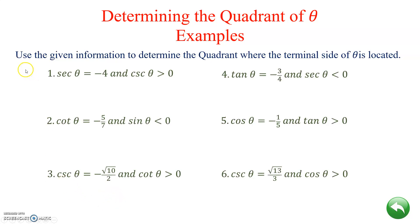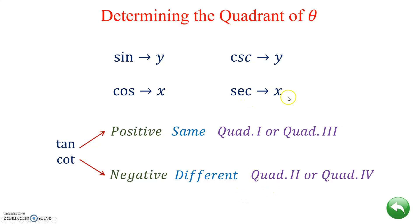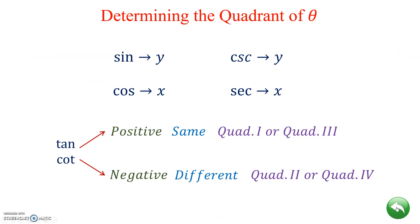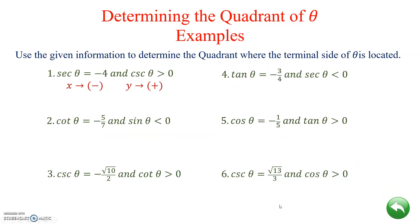Example 1: Use the given information to determine the quadrant where the terminal side of theta is located. We're told secant of theta is negative — secant is associated with x, so x is negative. Cosecant is greater than zero, meaning it's positive — cosecant is associated with y, so y is positive. An ordered pair where x is negative and y is positive is quadrant 2.